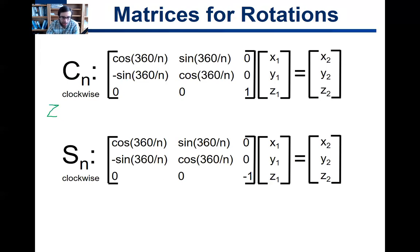Remember that an SN is equivalent to doing a CN and followed by a sigma H. So you do the CN, but then you're going to flip it across the z. So you rotate it across the z, and then you're going to flip that down to the other side. So whatever the z value was became a negative. That's the effect of the sigma H.